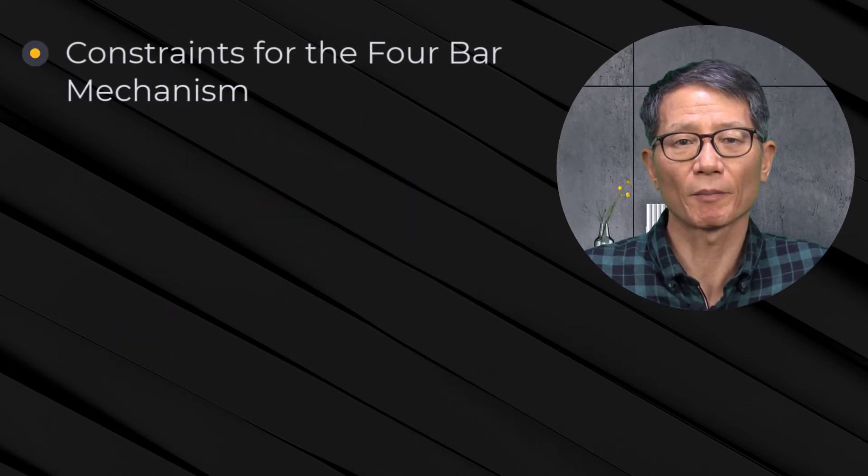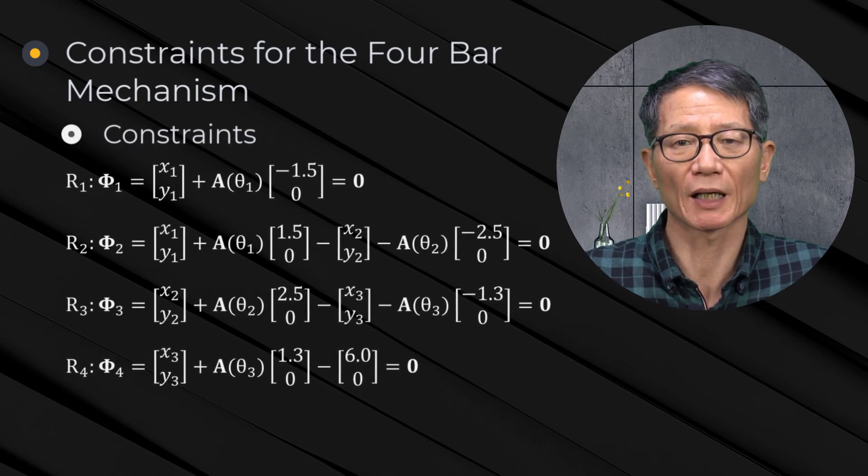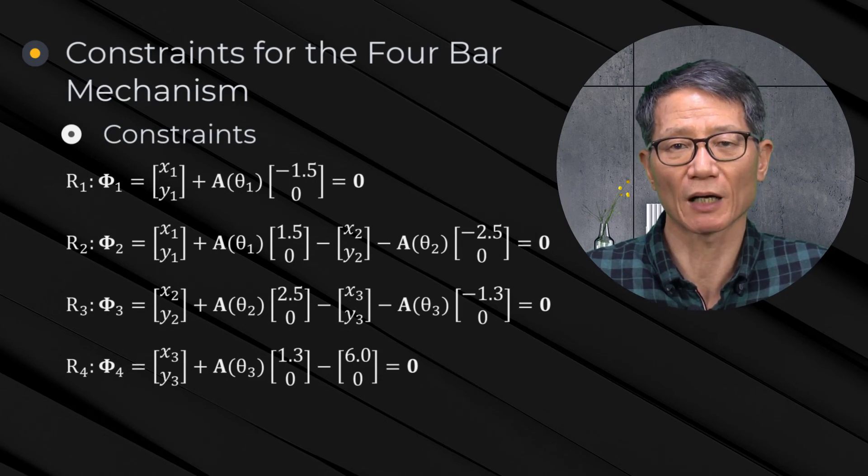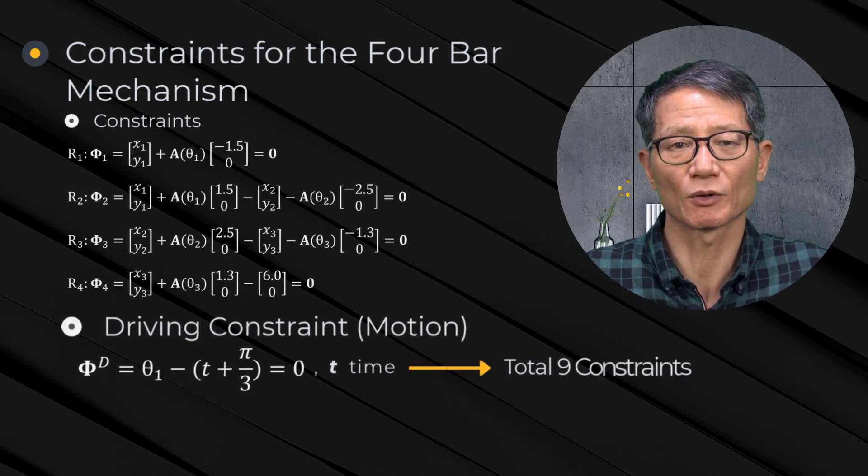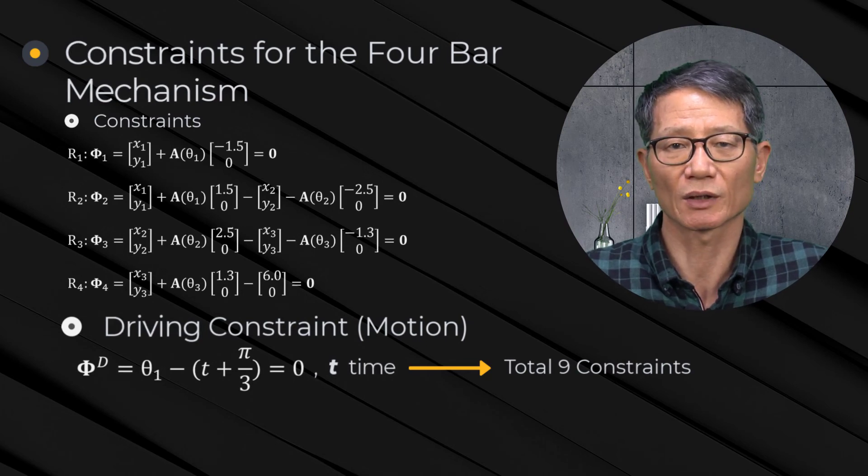Constraint for the four-bar mechanism. The constraint equation for the four-bar mechanism can be developed by applying the standard constraint of a revolute joint as follows. In addition to the kinematic constraint from the revolute joints, a driving constraint is added to impose a time-dependent condition on the revolute joints.